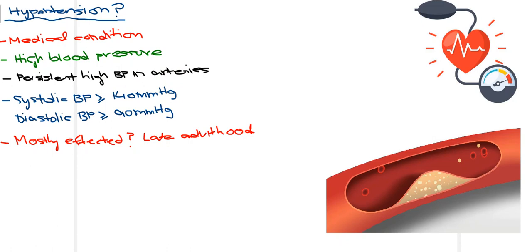There are two blood pressure readings we mostly take. The first is systolic blood pressure, which is when blood is actually moving out of the heart. The second is diastolic blood pressure, when the heart is in a relaxed state and is being filled with blood. The cutoff value for diagnosing hypertension is 140 mmHg systolic and 90 mmHg diastolic.